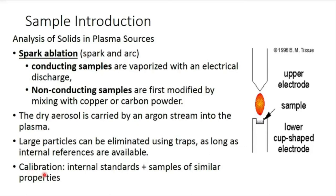Calibration means that if 10 units of sample is present, the signal given by the machine should correspond to that 10 units. To calibrate, a known quantity of analyte should be added to the machine and the signal adjusted accordingly. For example, if you are analyzing cadmium or iron, a sample containing a known quantity should be introduced, spark ablation carried out, and the signal should be proportionate to the sample taken.